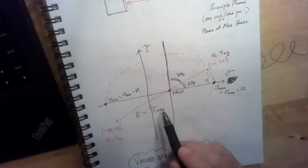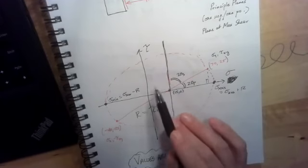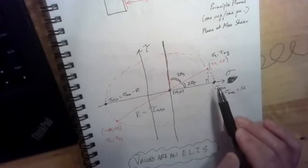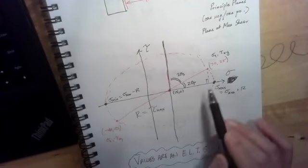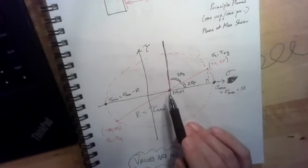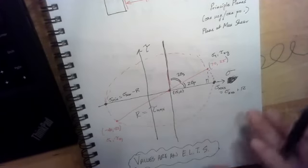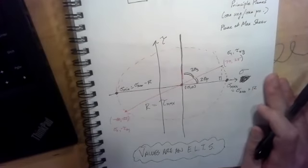And then the radius of course is just tau max. If I want to know sigma max, it's sigma average plus r. And then sigma min is sigma average minus r, and the values are just going to be an exercise left to you.